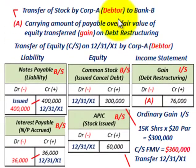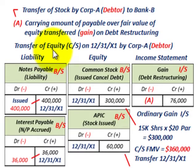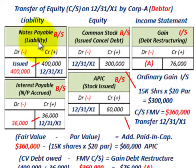Let's look at how we'd record this from Corp A, the debtor's perspective — this is where they transfer the stock to Bank B. The carrying amount of the payable over the fair value of the equity transferred will produce a gain on debt restructuring for Corporation A. Corp A has a notes payable liability on their balance sheet, and they also have interest payable on the accrued interest of that note — both of which they are going to write off.